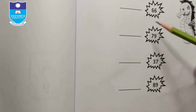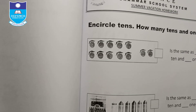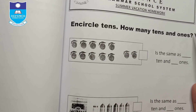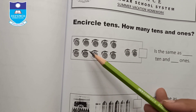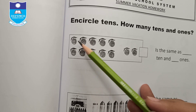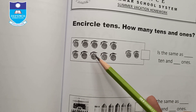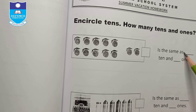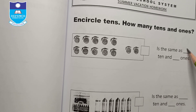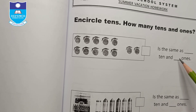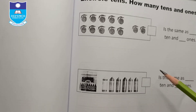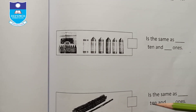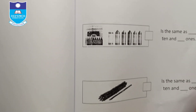Circle tens and ones. Count the tens and ones in each picture. For example, count ten objects — that is one ten — plus two more, so write: one ten and two ones. Complete all the blanks by counting the tens and ones.